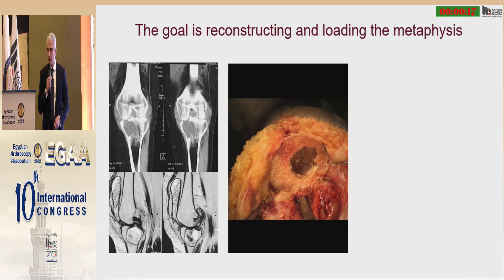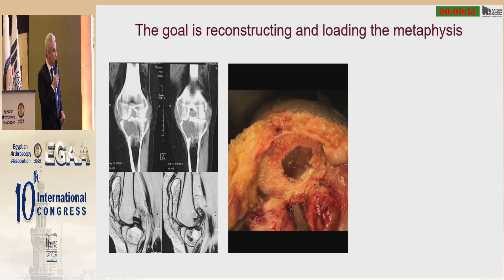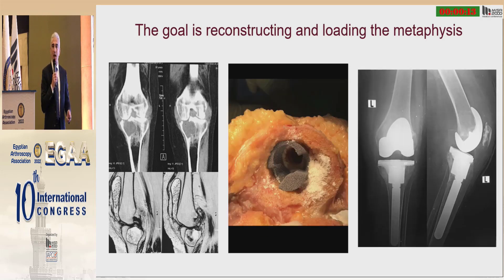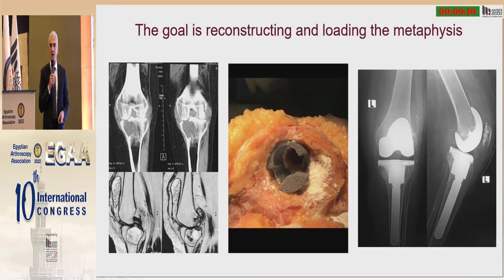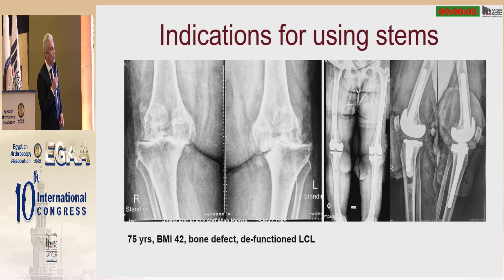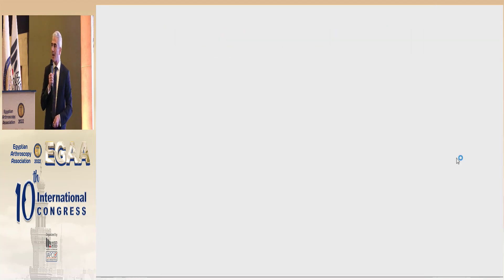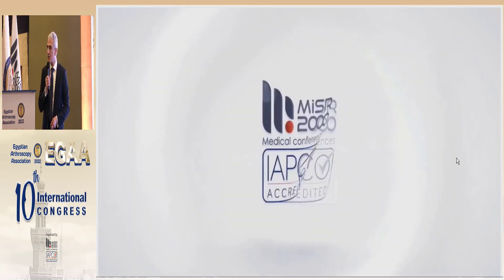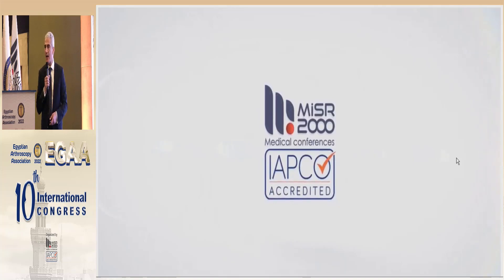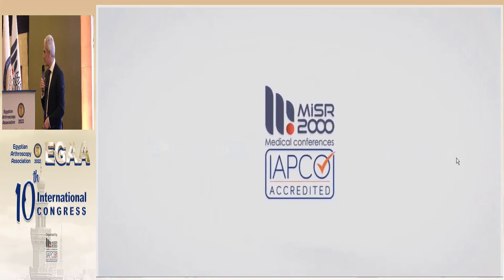Now, primary knees that may need a stem: patients with metaphyseal defects, where we try to load the metaphysis using cones and stems to support the primary implants. In severely osteoporotic patients and those with severe deformities and bone defects, metal augments may be used to support the tibial tray — and this is when an indication for a stem may arise.